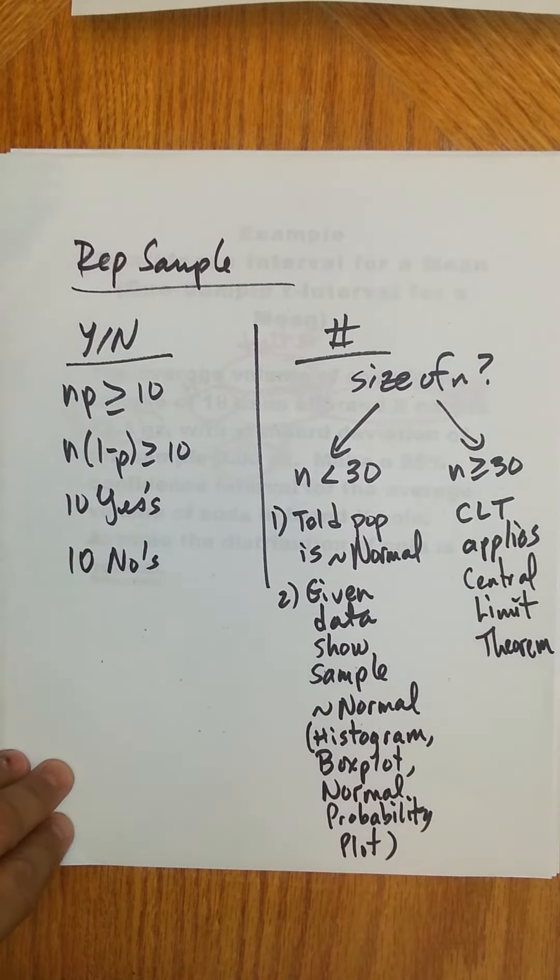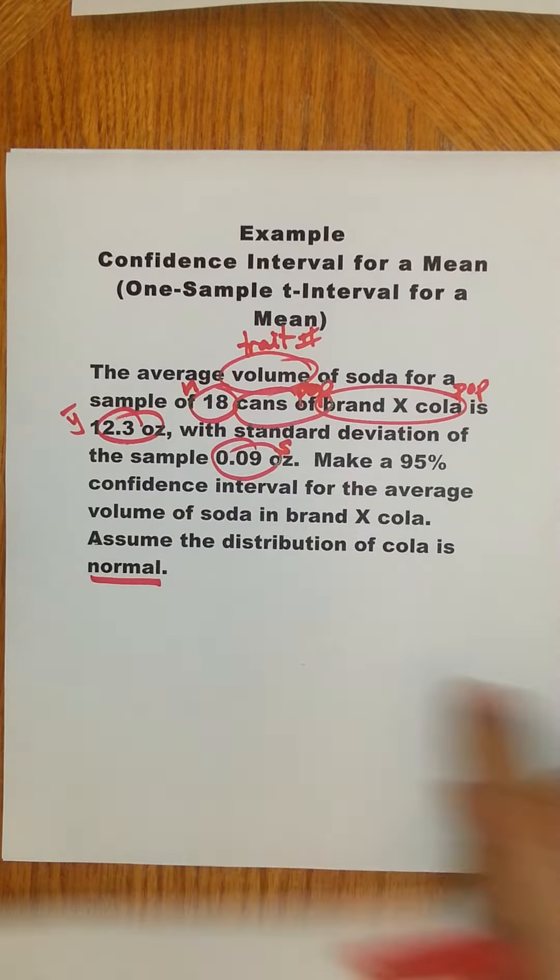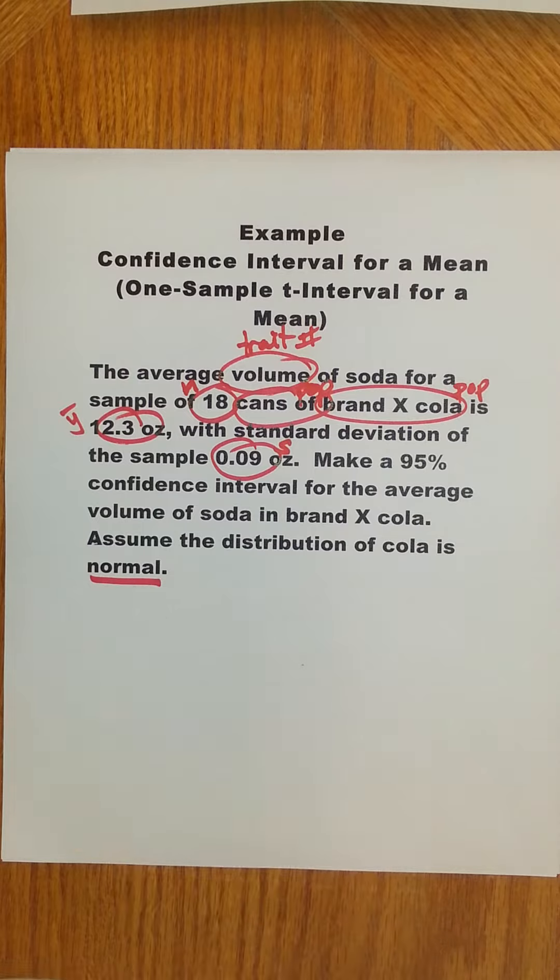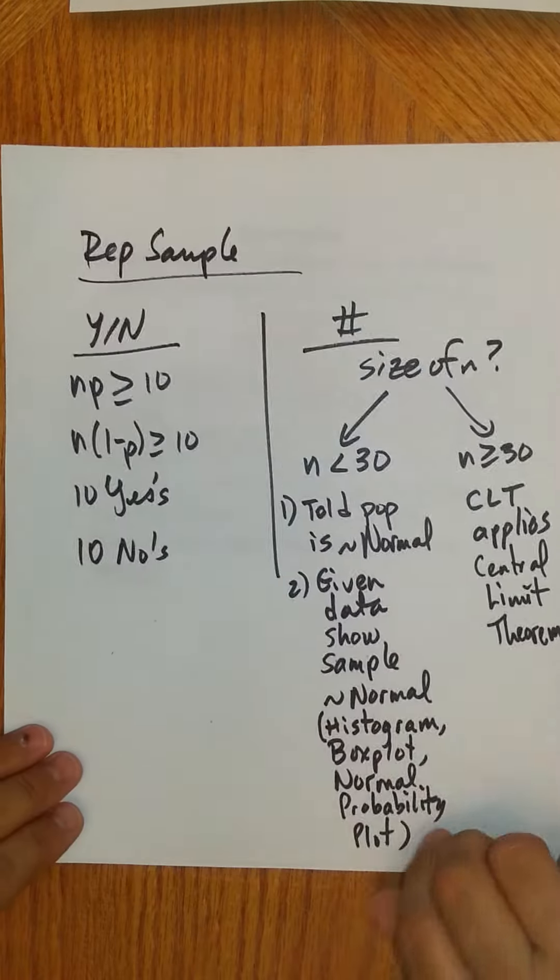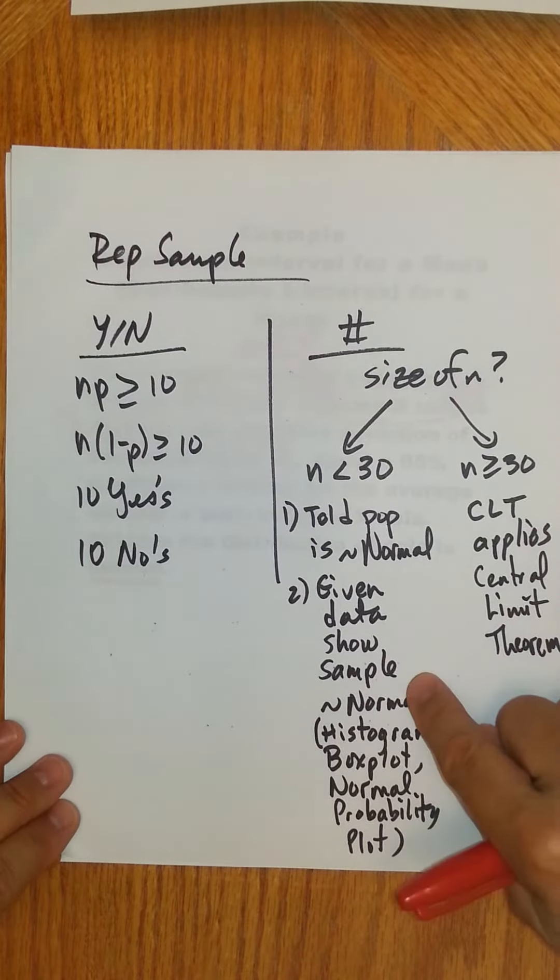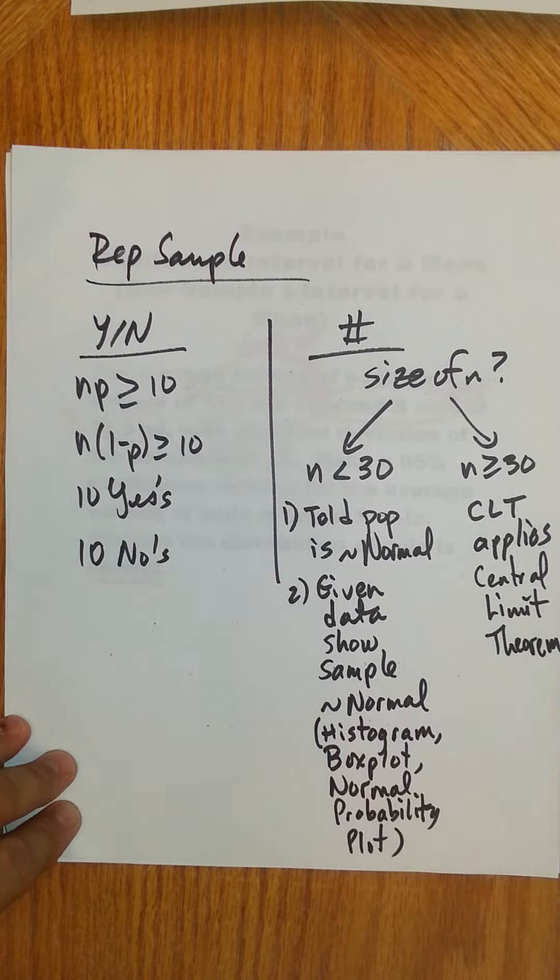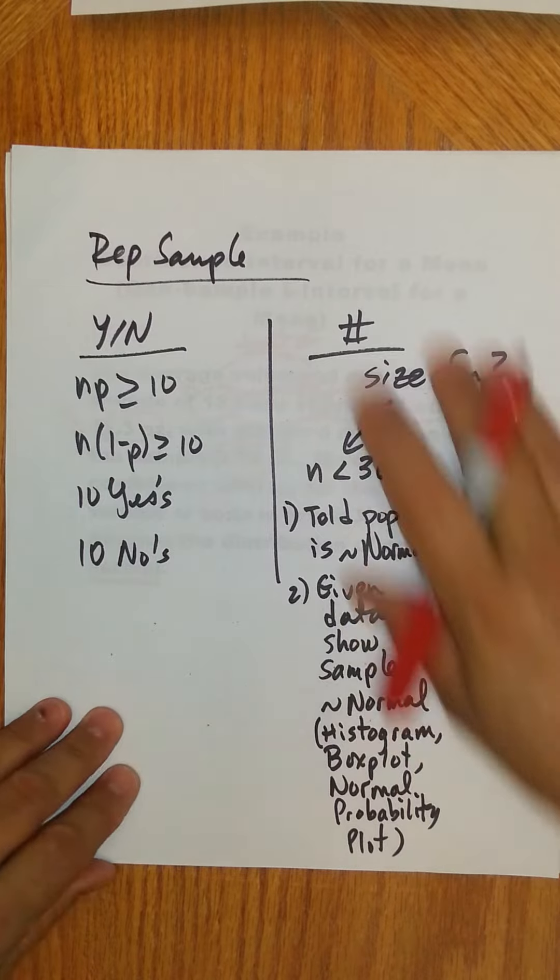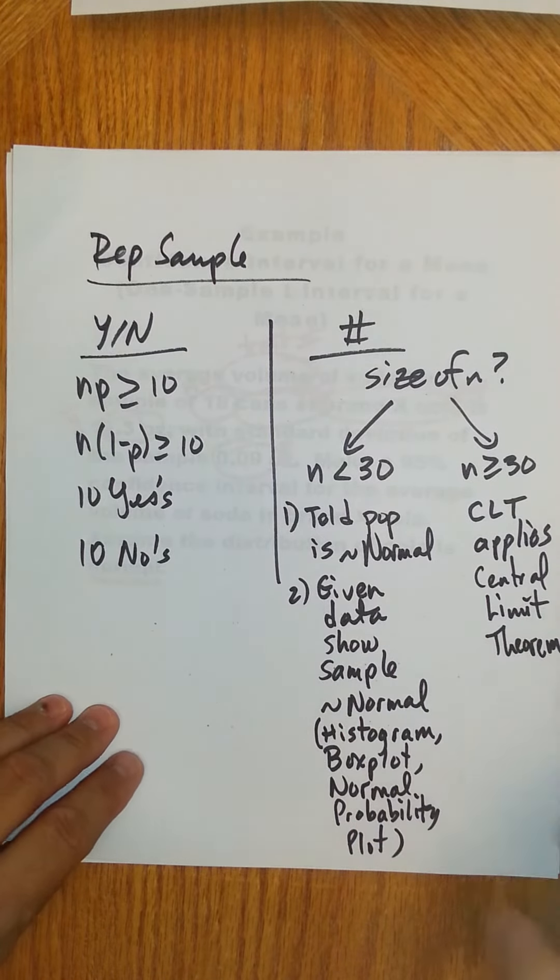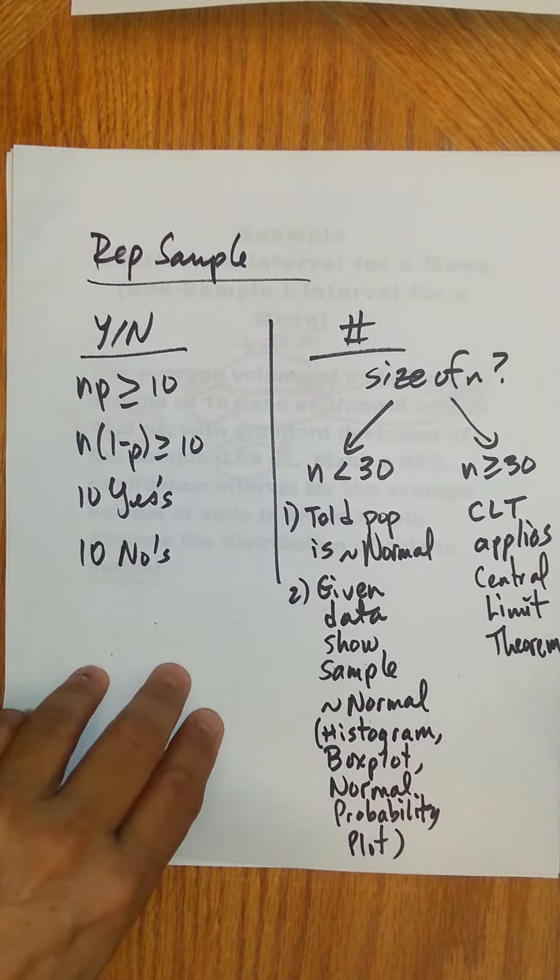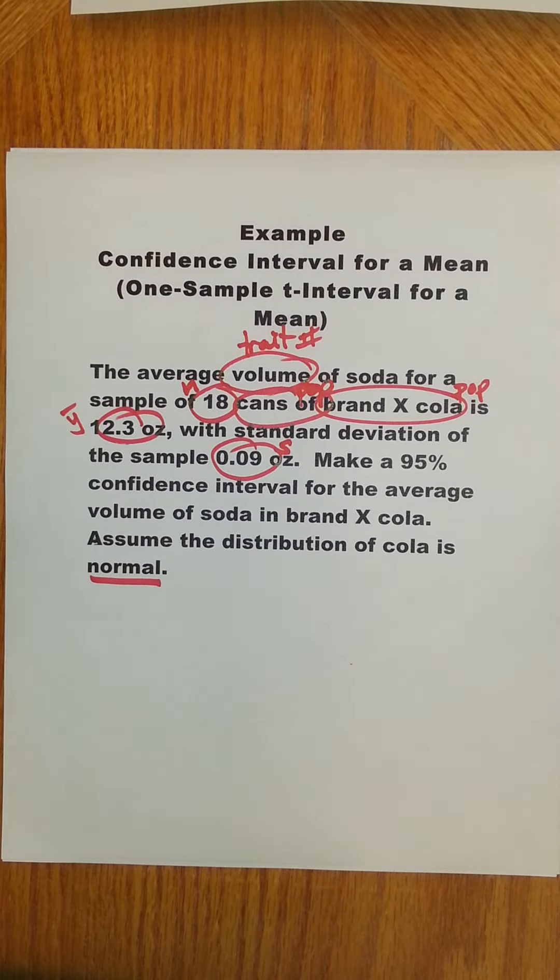If your sample size is less than 30, you either have to be told the population is normal, which in this case we were, right? We were told assume the distribution of the cola is normal. Or if you're given data, you have to show that the sample is approximately normal and you use either histogram, box plot, or normal probability plot. So this is really where the extra work is in a numerical trait.